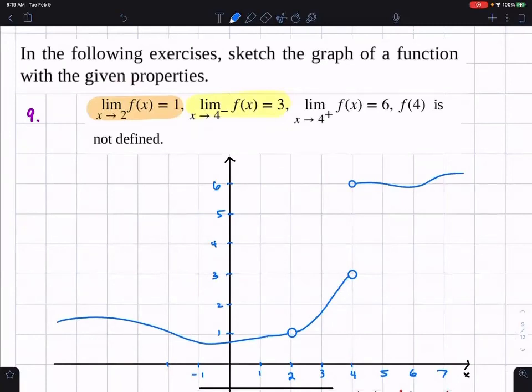So if I wanted to, it might cause confusion. I can put f of 2 is equal to 5 if I want. I could do that, but it doesn't say anything about what f of 2 is. But it does say f of 4 is not defined.